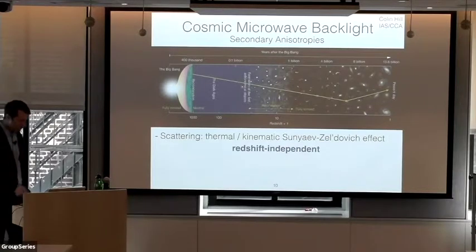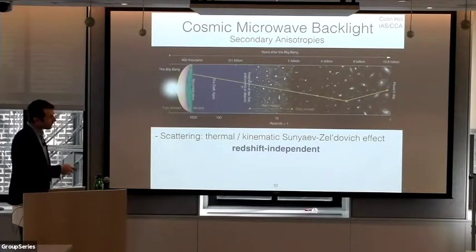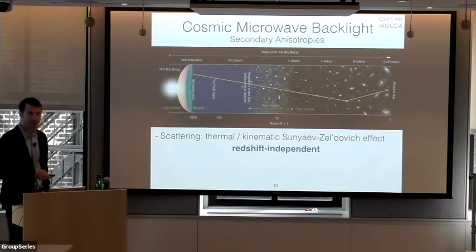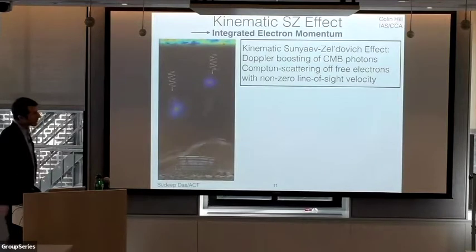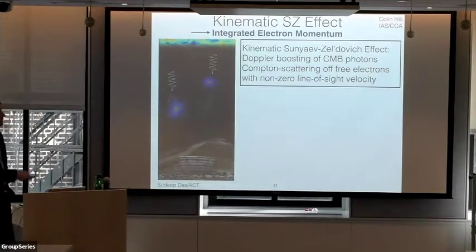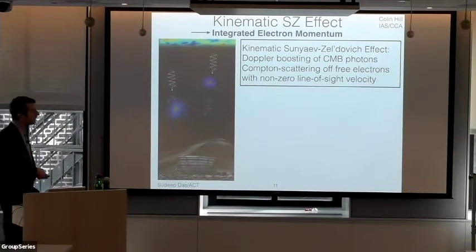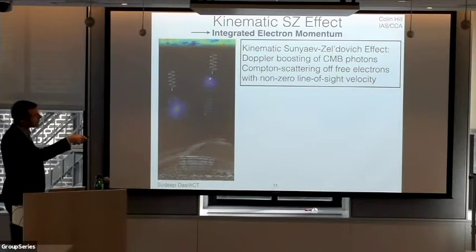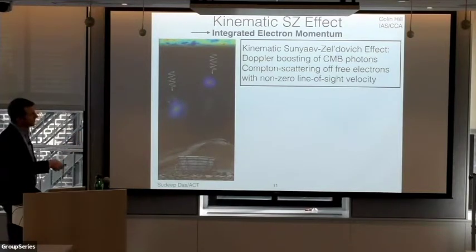First, let me talk about scattering processes: the thermal and kinematic Sunyaev-Zel'dovich effects. One neat property of these effects is that they are redshift-independent because they're scattering rather than emission processes — a pretty unique property in observational astrophysics. The kinematic SZ effect refers to the Doppler boosting of CMB photons as they scatter off of free electrons moving with some non-zero line-of-sight velocity. Imagine clouds of ionized gas in galaxy clusters or galaxies falling towards each other with some velocity component along the line of sight — this up-scatters some photons and down-scatters others, probing the integrated electron momentum along the line of sight.